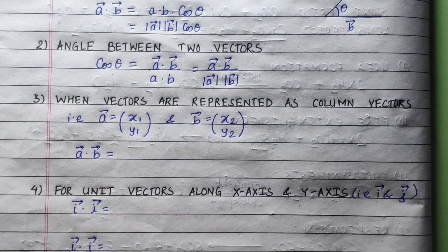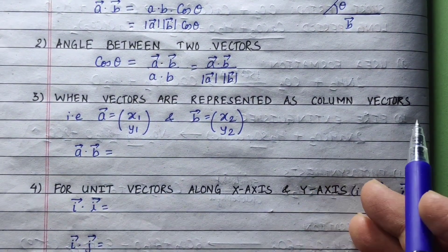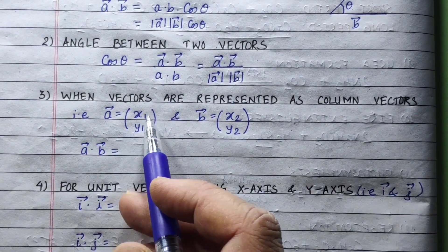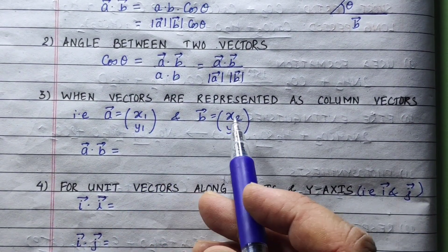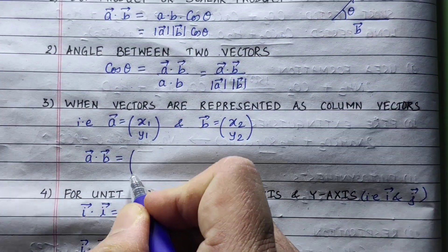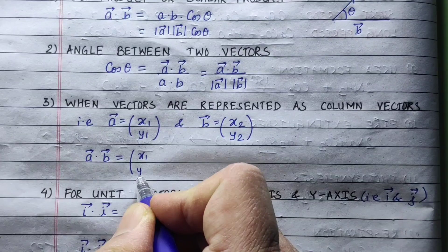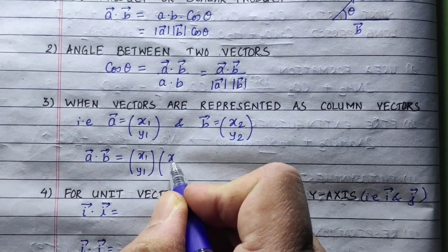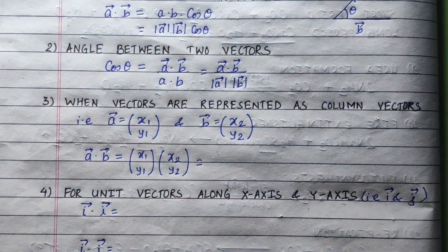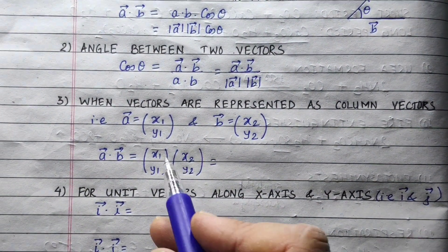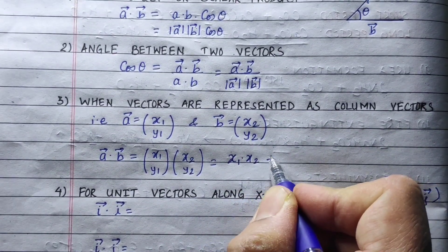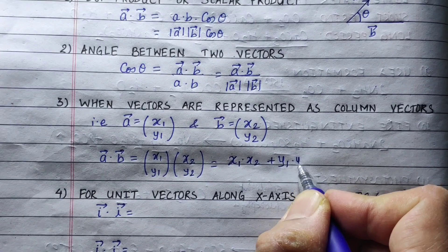Now, we can represent a vector in column vector form. So vector A is (x1, y1) and vector B is (x2, y2). Then we can use the dot product. The dot product is x1 times x2 plus y1 times y2.